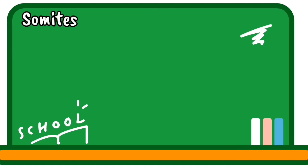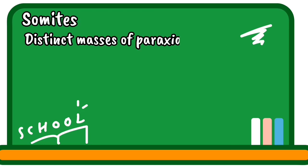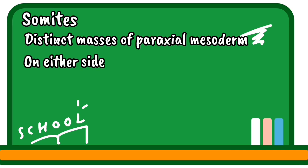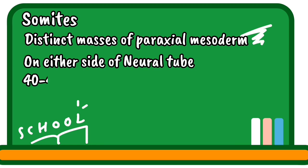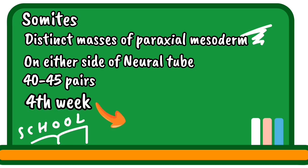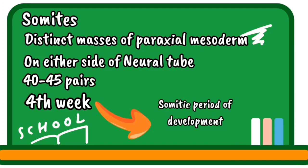Somites are paired masses of paraxial mesoderm distributed along the neural tube that eventually give rise to several structures. Somites are found in 40 to 45 pairs and appear on the 20th to 30th day of development, that is, during the 4th week. Therefore, the 4th week of development is called the somitic period.